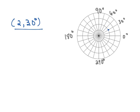For example, if we wanted to graph 2, 150 degrees, we want to turn toward 150 degrees and then move out two units. So our green point is graphed at 2, 150 degrees.